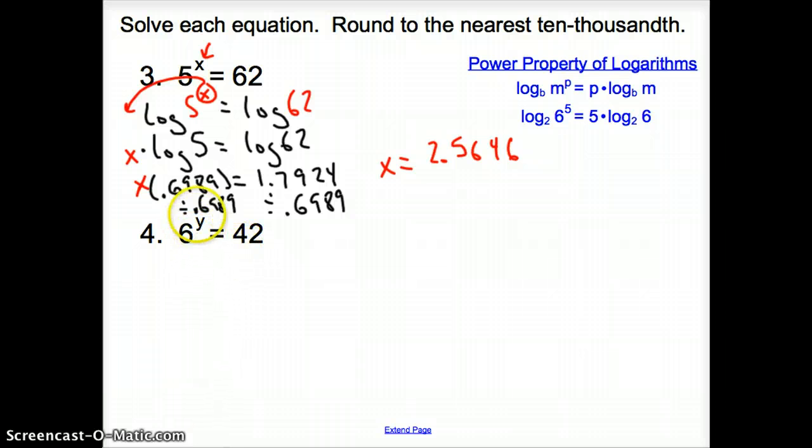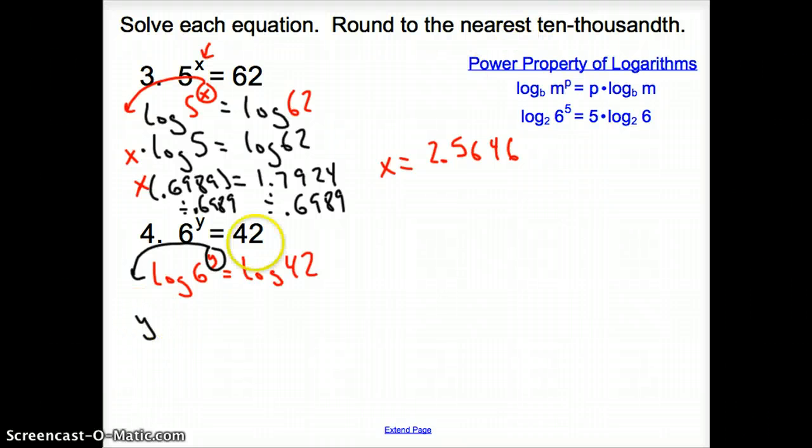Here let's try it again on number four. Now we have an exponent right here. We have to take the log of both sides. When we take that log of both sides that exponent has to come down in front of the log. So now it's y times log of 6 equals log of 42.